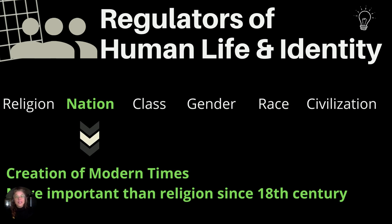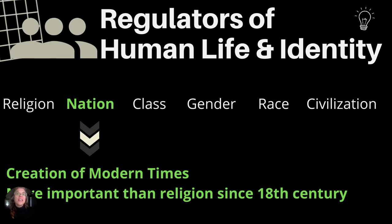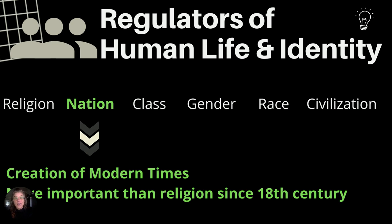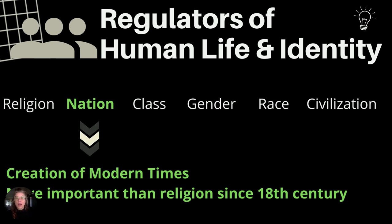The next regulator, moving on from religion, is national identity. This national identity might be the most significant creation of modern times. Since the 18th century, it has been more important than religion as a regulator, shaping our national identity. And it is a leading cause, much like religion, of global conflict due to how different judgments we make of how other people live their lives.